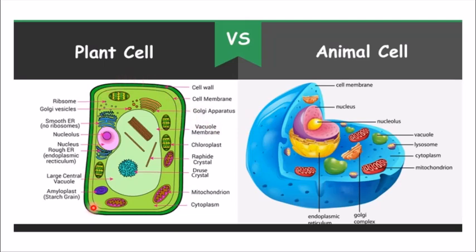Inside the cell, the empty space is filled with what is called cytoplasm. Cytoplasm is present in both plant cell and animal cell. There are different organelles present in both plant cell and animal cell. The most important organelle is the nucleus.